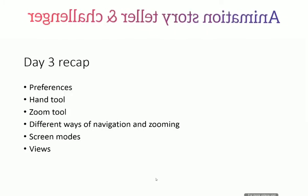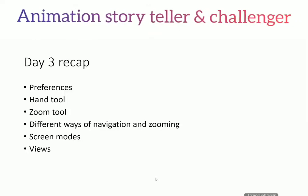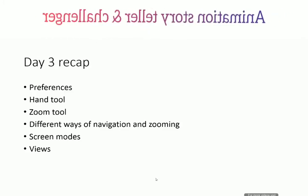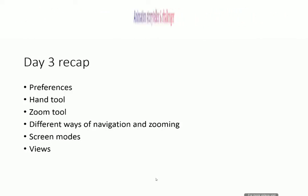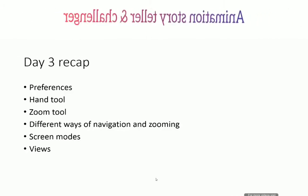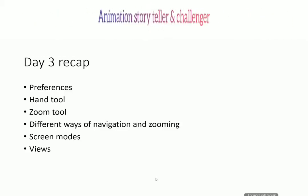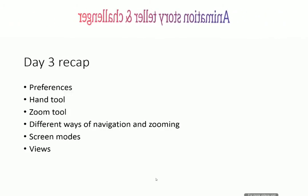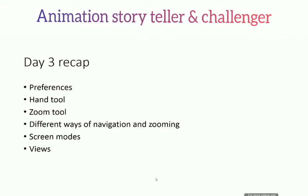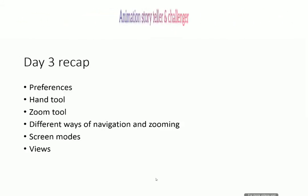Moving on, we learned about screen modes: Adobe Illustrator supports three screen modes — normal, normal without menu bar, and full screen mode, or you could say normal, semi-full screen, and full screen. Those modes can be switched from the toolbar or by pressing the F key on the keyboard. Then we learned about views: how to create custom views, how to switch to those views, and how to delete them. Views only manage information about zooming and navigation.